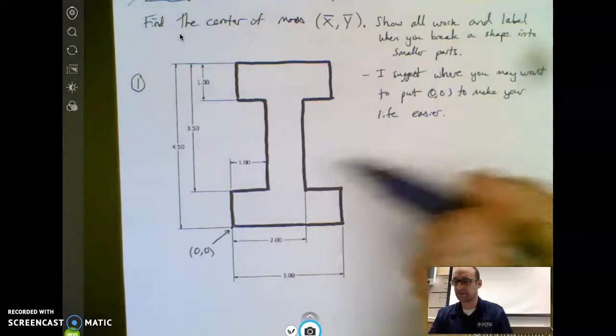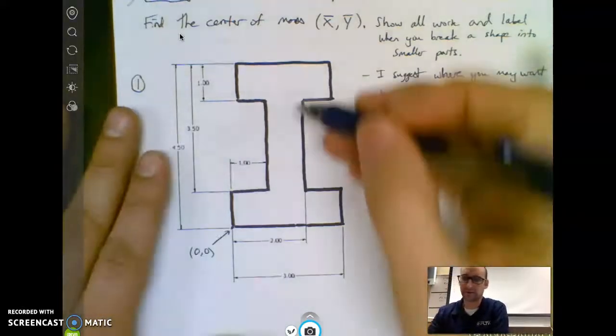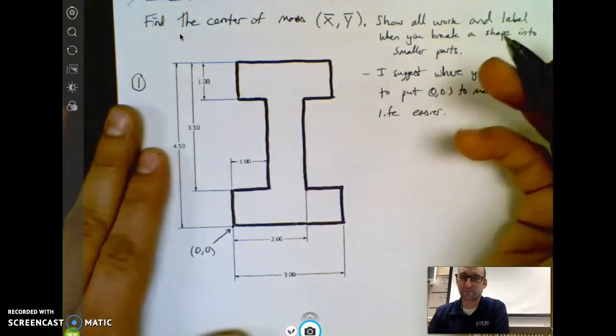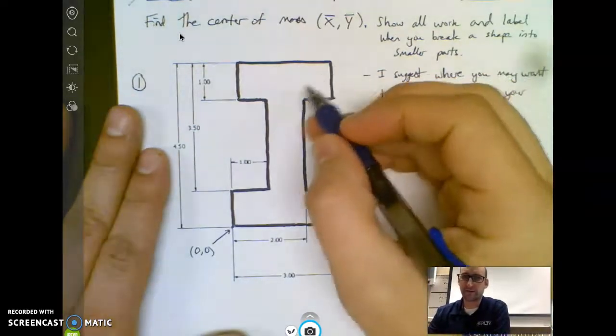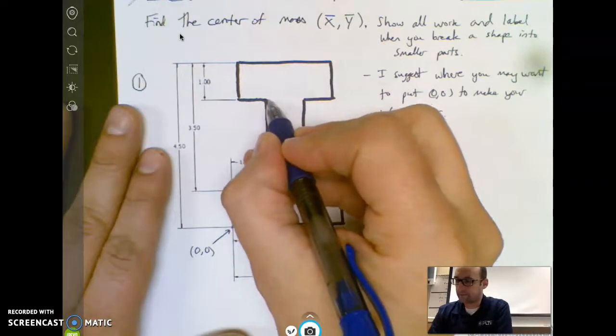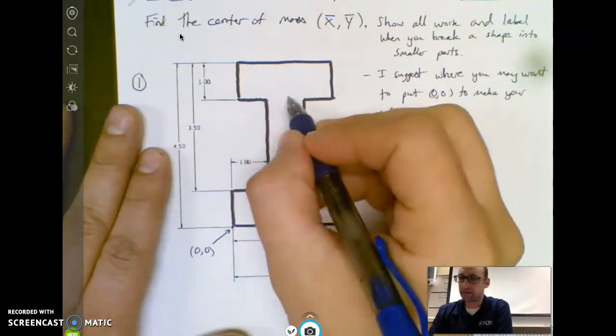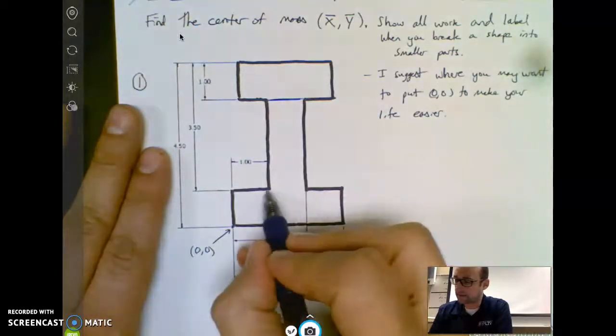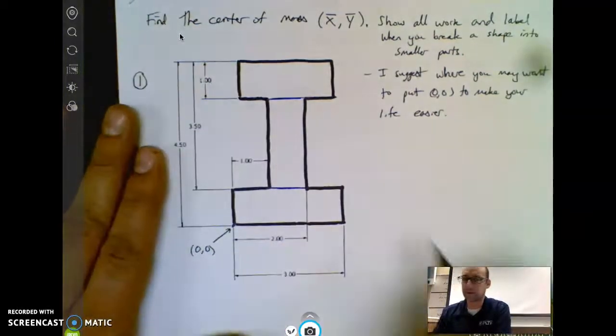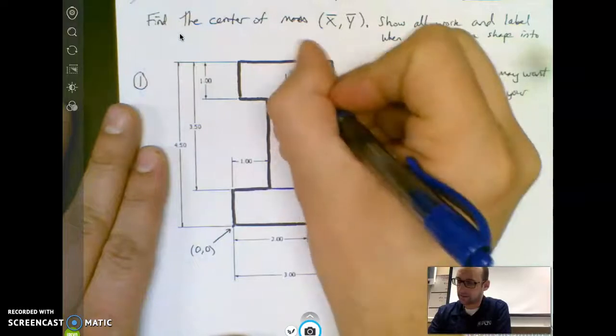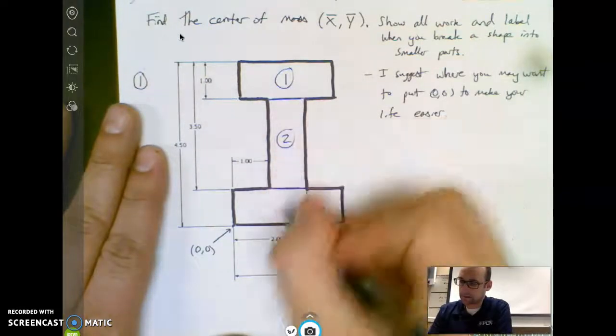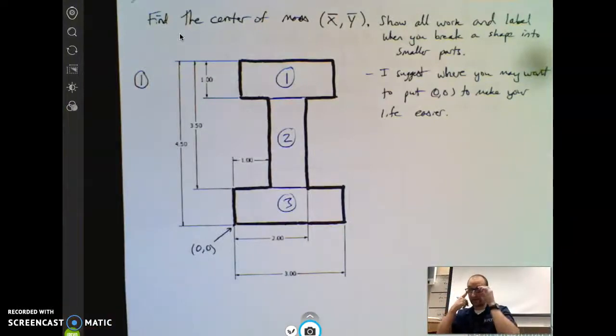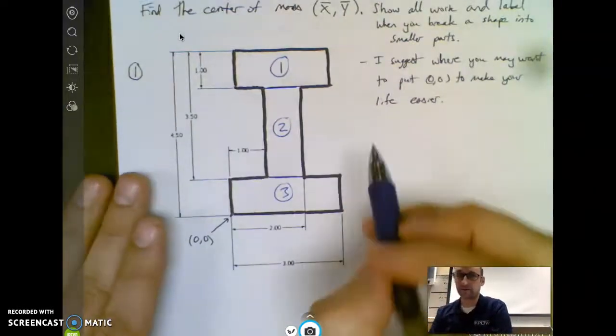Alright so first things first, let's break this into easier shapes. Now there's a lot of ways you can break this into shapes but an I-beam is not something you can find the parts. There's a different formula for it but since I don't know the formula for an I-beam, I can break it into three pieces. This is piece one, this is piece two, this is piece three. I label my stuff so when I'm doing work I know which piece I'm working on.